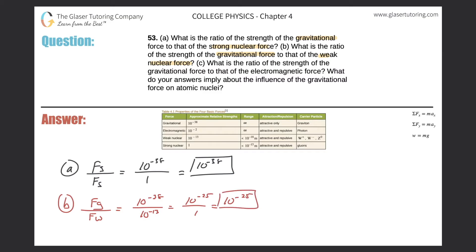Letter C: what is the ratio of the strength of the gravitational force to that of the electromagnetic force? From the table, the force of gravity is 10 to the minus 38 and the electromagnetic force is 10 to the minus 2. Subtracting the exponents, we add 2 to negative 38, giving 10 to the negative 36 — that's how many times weaker the gravitational force is than the electromagnetic force.